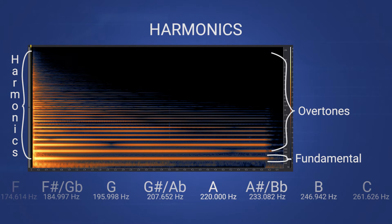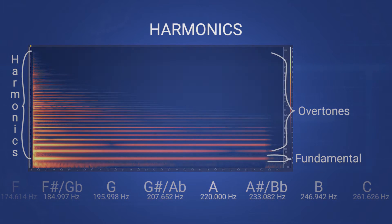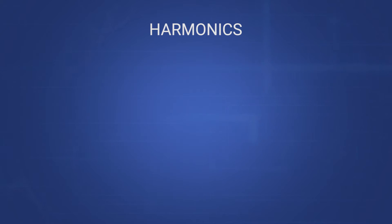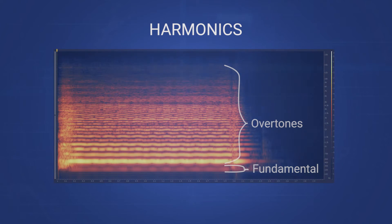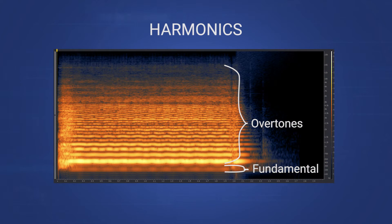Frequencies that are part of this harmonic series make up the sound's tonal information, whereas sound that is not part of this content — like the noise of a piano hammer striking the piano string, or the gritty sound of a bow hitting the violin strings harshly — add non-tonal character to the instrument's sound.